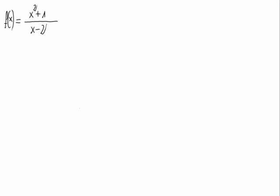Given the function f of x equals x squared plus 1 divided by x minus 2, let's calculate its horizontal asymptotes.